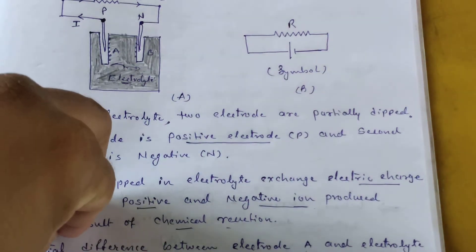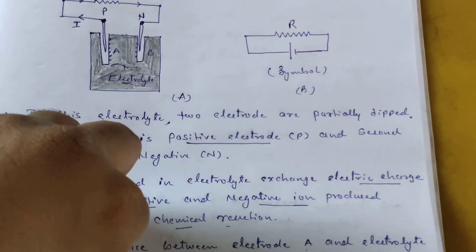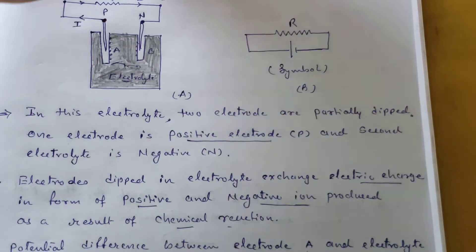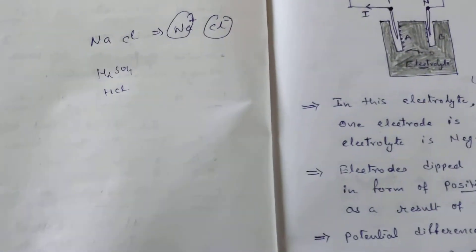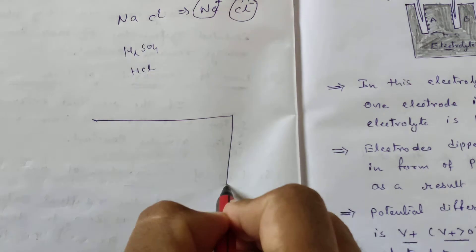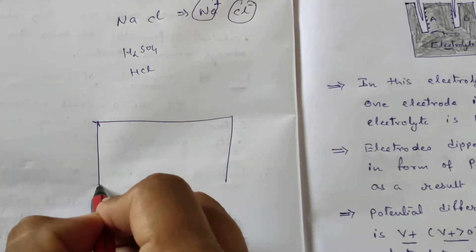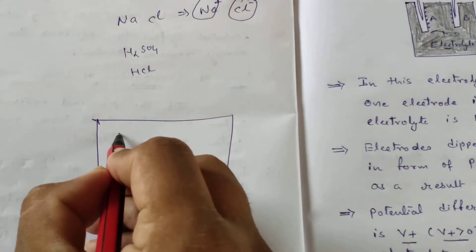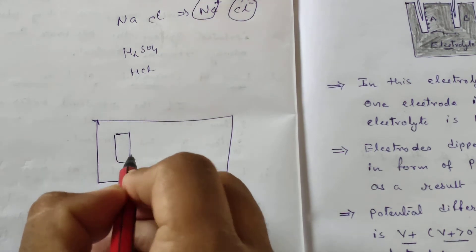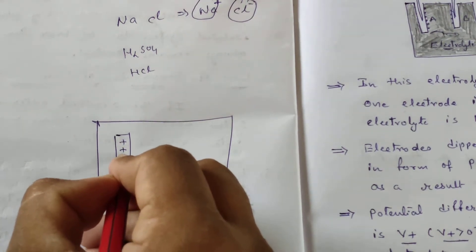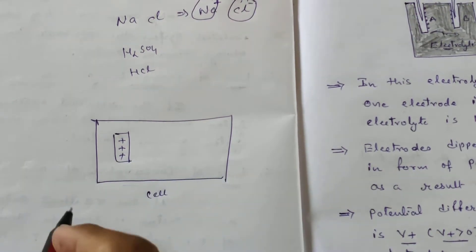How the potential difference is produced, that we have understood. Now let me explain EMF once again. Consider a cell — suppose you have to understand the difference between two points. Here we have a positive terminal.